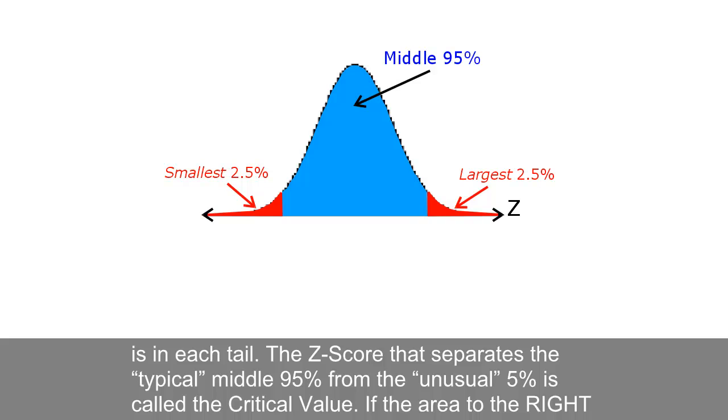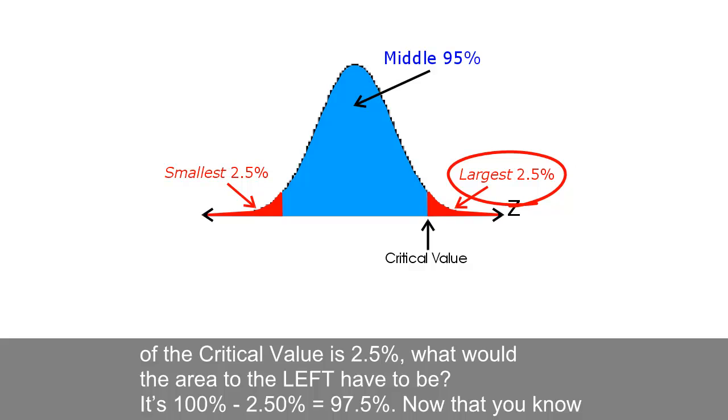The z-score that separates the typical middle 95% from the unusual 5% is called the critical value. If the area to the right of the critical value is 2.5%, what would the area to the left have to be?